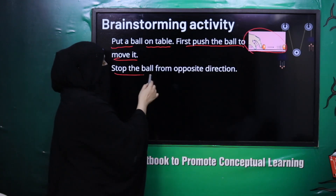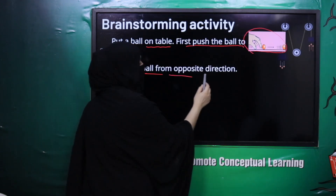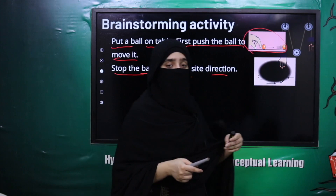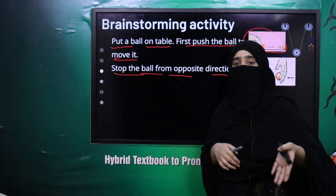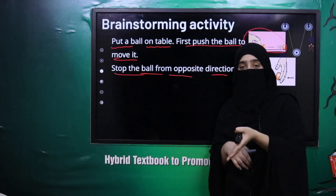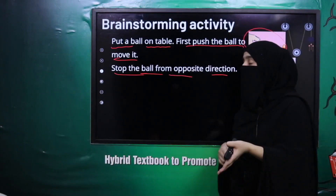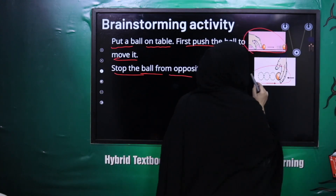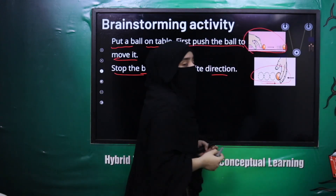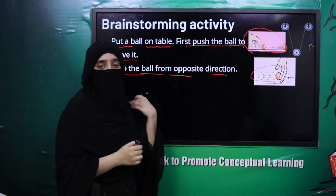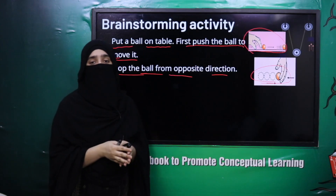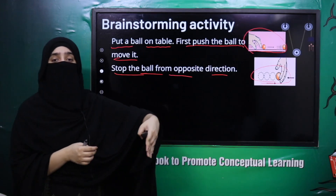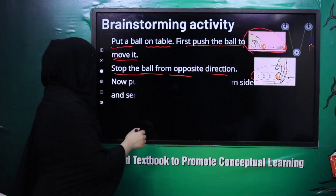Next, stop the ball from opposite direction. Ab doosri direction mein jaake us ball ko stop karein. To aap dekhenge ki jo ball hai wo apni motion rok dega — uski motion ruk jaayegi jab aap opposite direction se usko stop karenge.